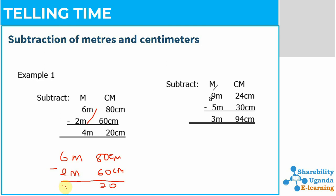We have to ensure that the values we have got carry their correct units. If they are centimeters, they should be written as centimeters. When you leave out the units, they mean something else and you may lose a mark for that.